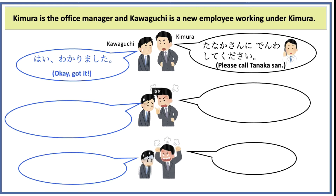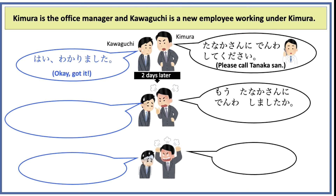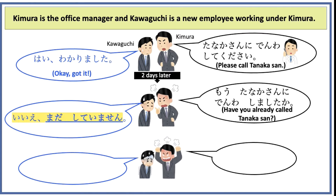Two days later, Kimura asks, Mou, Tanaka-san ni denwa shimashita ka? — Have you already called Tanaka? Kawaguchi answers, Iie, mata shite imasen — No, I have not.